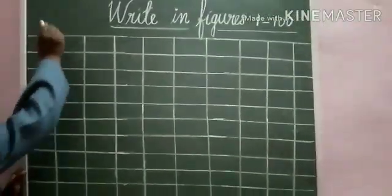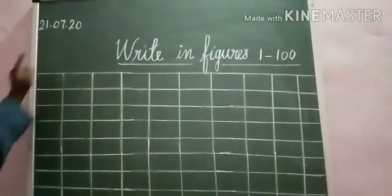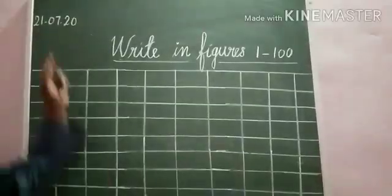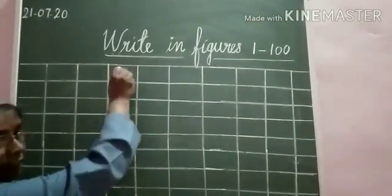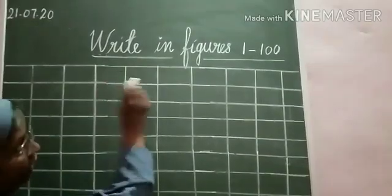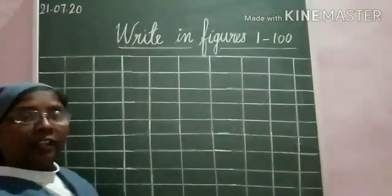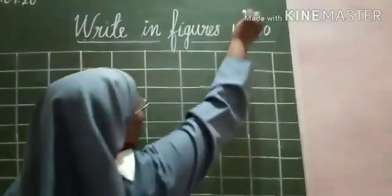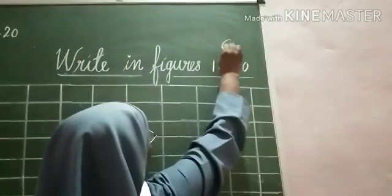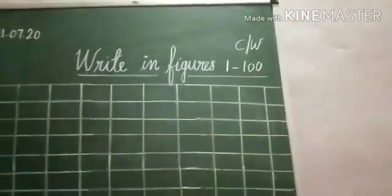Before we begin, we have to write the date. Today it is twenty-first. So you have to write the date. Then we have to write the title: write in figures, or counting from one to hundred. And you have to write on the right side of the page, C.W., that is classwork.